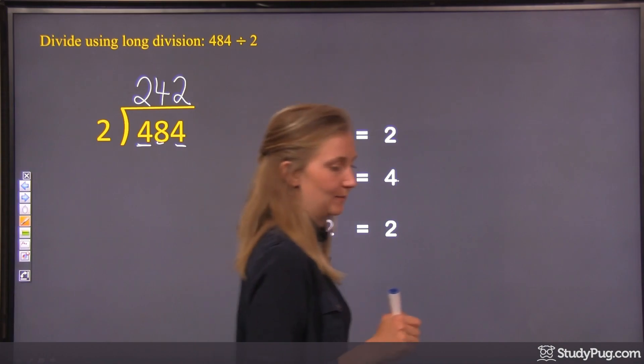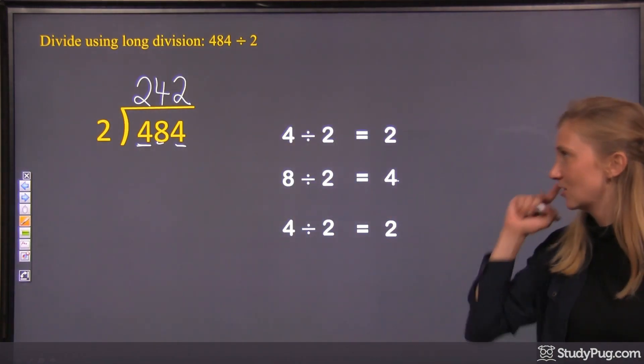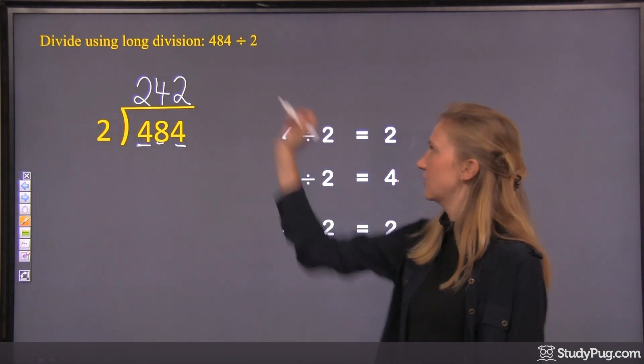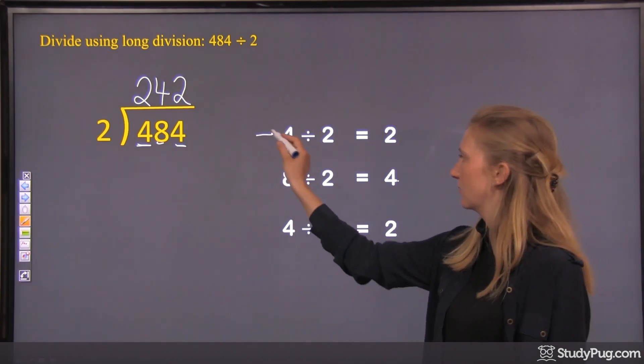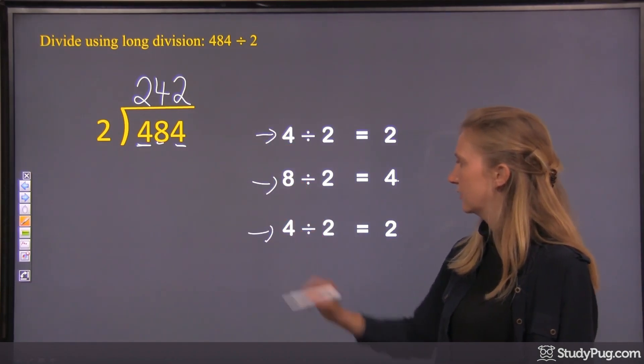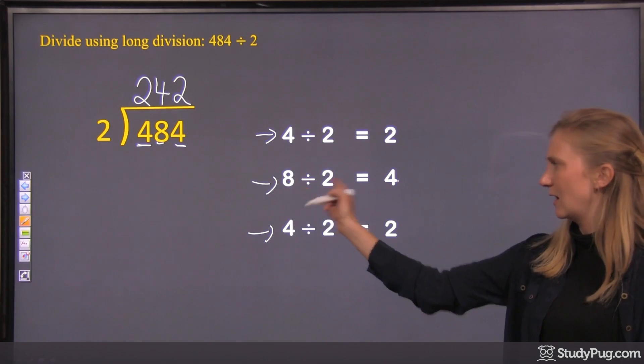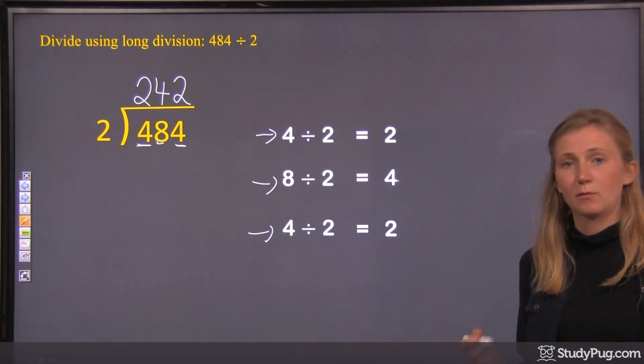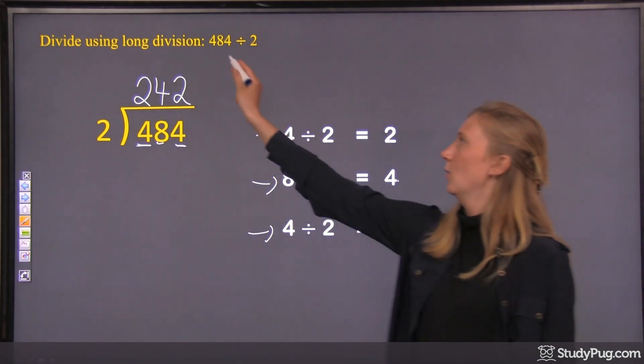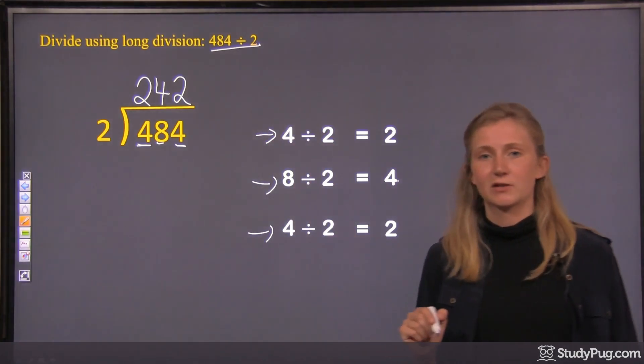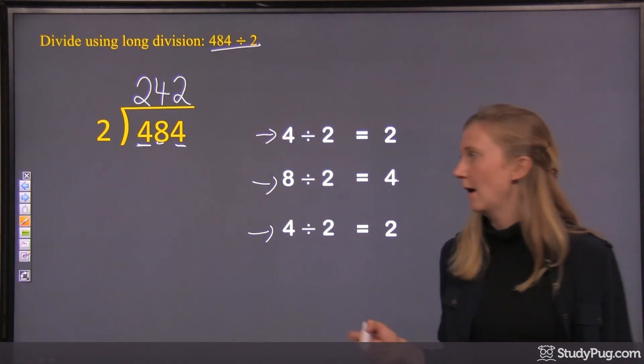All right, pretty easy, right? Turning a big multi-digit number into just 3 really easy divisions. 4 divided by 2, 8 divided by 2, 4 divided by 2. Those are all simple divisions, but we can use those to solve this bigger division question using long division.